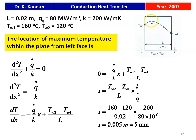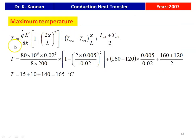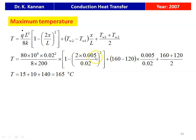The temperature distribution equation for the slab is T = (q̇L²/8K)·(1 − 2x/L)² + (T_w2 − T_w1)·x/L + (T_w1 + T_w2)/2. Substituting x = 0.005 m: the first part is 15, second part is 10, third part is 140, giving T_max = 165°C. This is the maximum temperature in the slab.